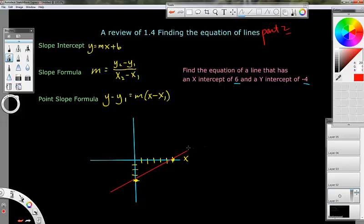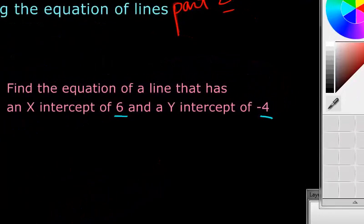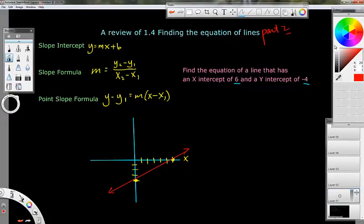What I have to do is find the equation of this red line. That's what we're doing here. We're finding the equation of that line that passes through this point and this point. Let's label these two points. This is 6, 0. This is 0, negative 4. That's the coordinate of that point.